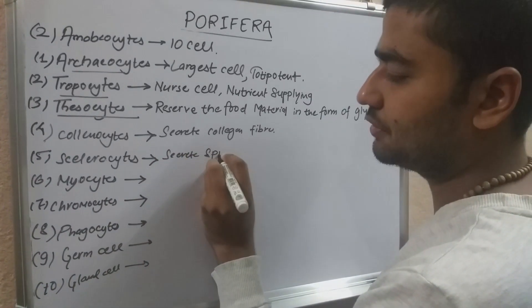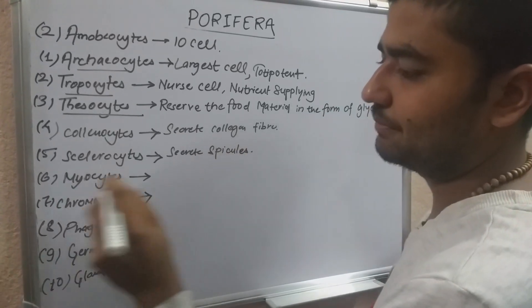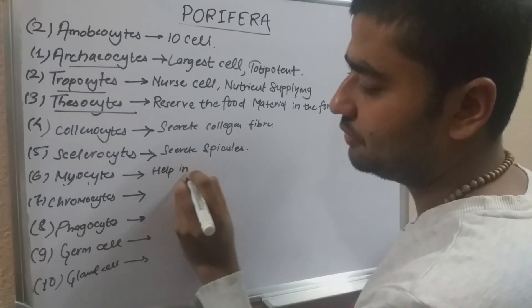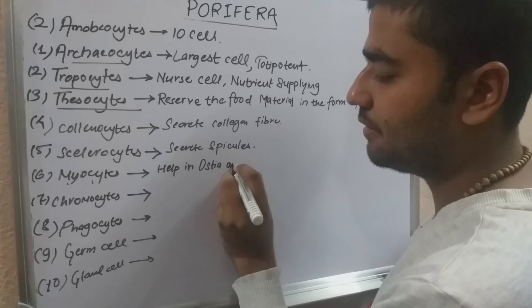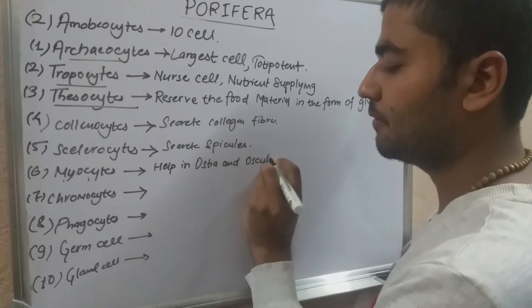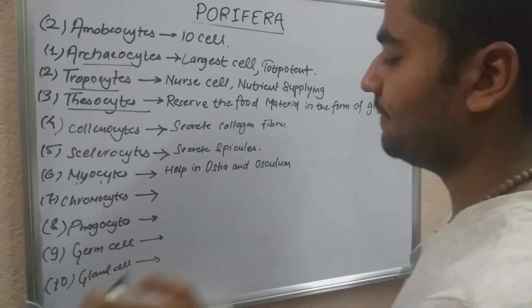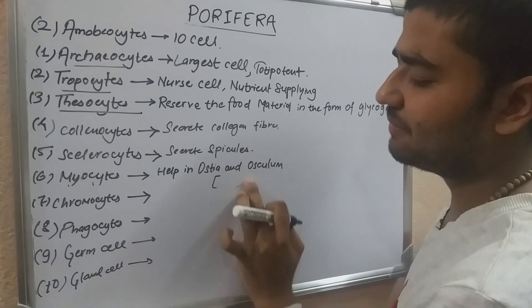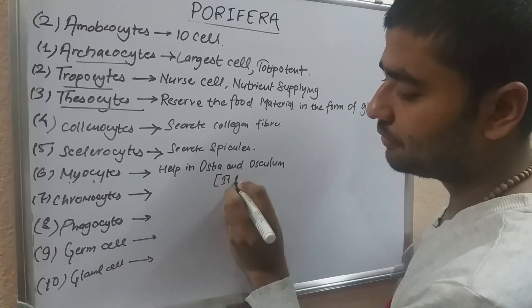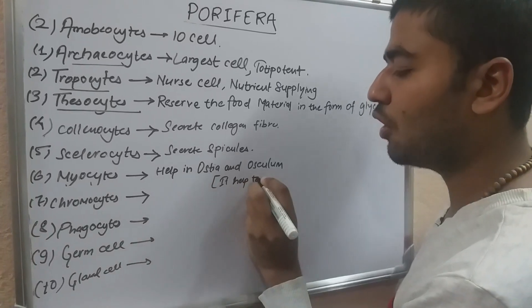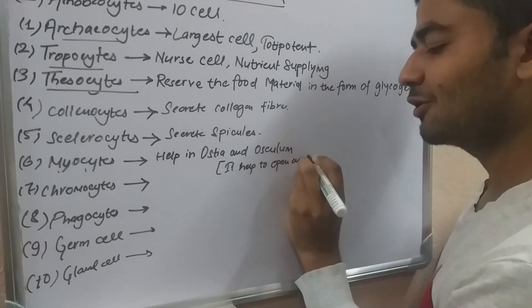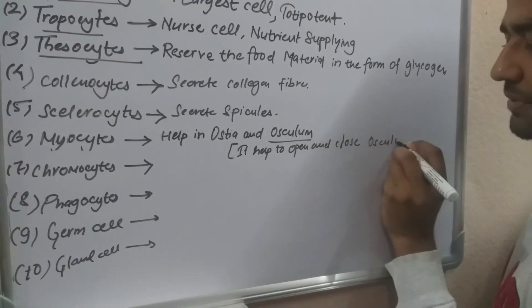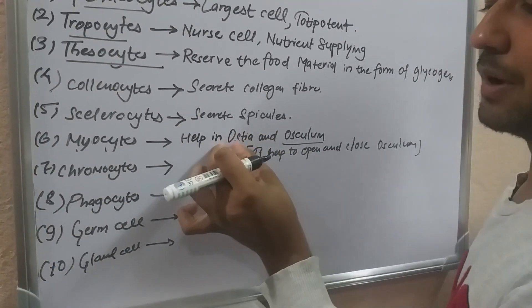Pinacocytes line the outer surface. They help check the openings — Ostia and Osculi — and regulate water flow through the canal system.